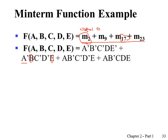Minterm index 17 is one-zero-zero-zero-one in binary — one-zero-zero-zero-zero-one — so we have a and e in true form, b and c in complement form. Decimal 23 in binary is one-zero-one-one-one, so we have a one-zero-one-on-one — that is the corresponding term for minterm index 23.